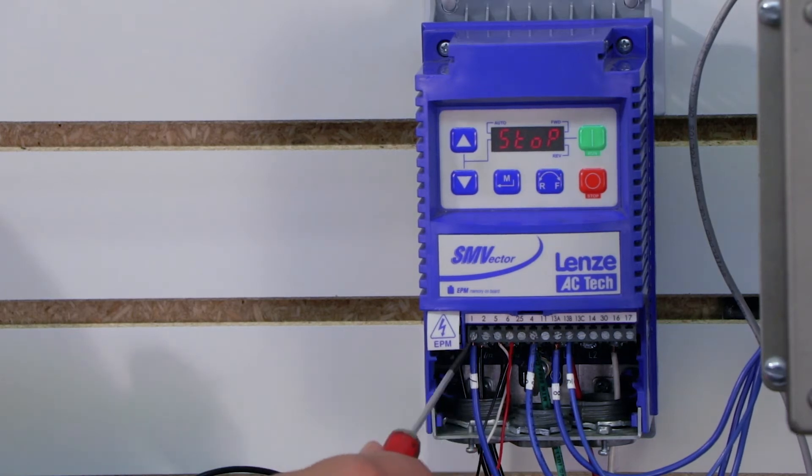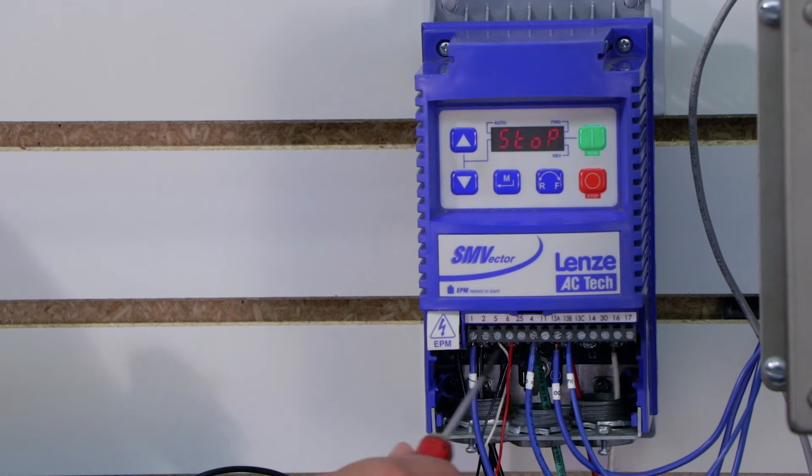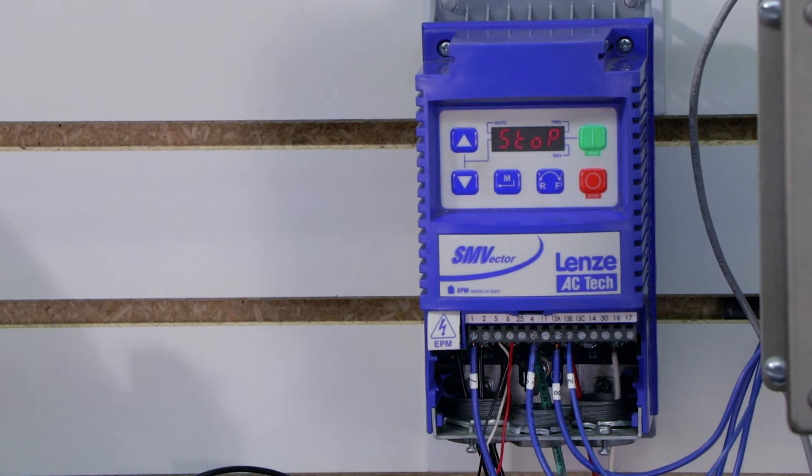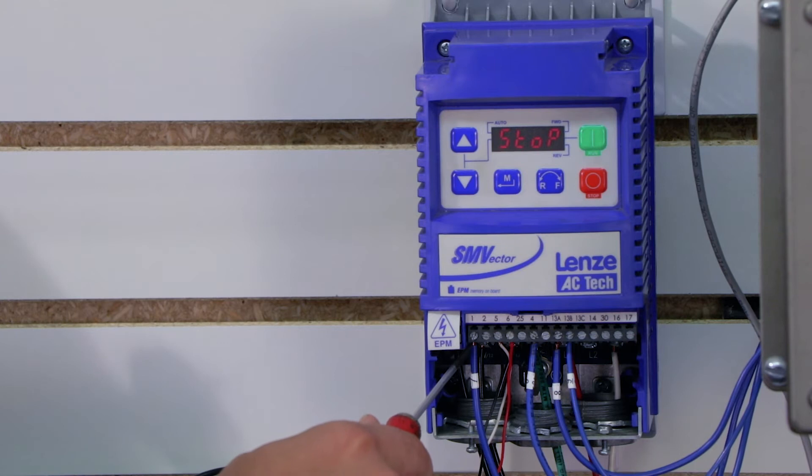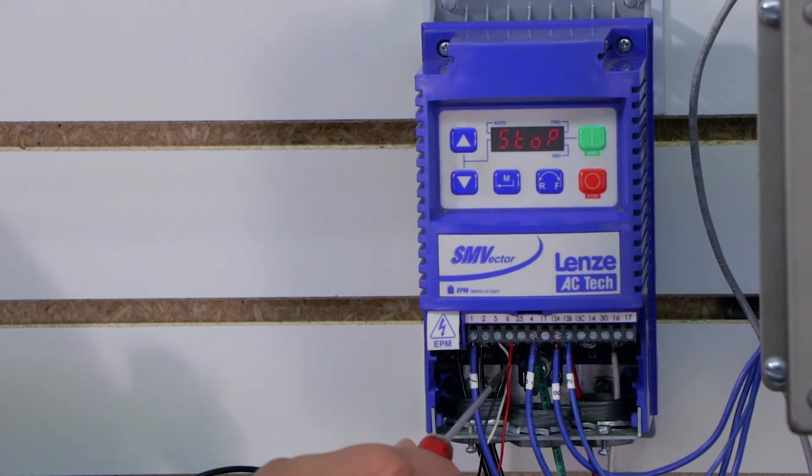Remember, this is a normally closed contact, which means electricity is constantly flowing between 4 and 1 until we press the stop button. Once we press the stop button, it opens up that contact, and the drive disables.